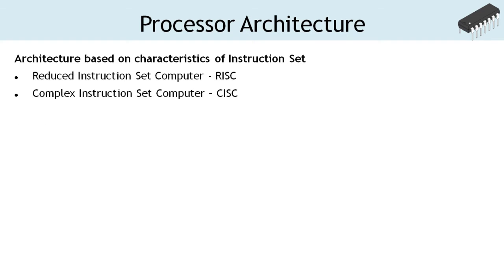In the last lesson I stated that microcontrollers use reduced instruction set architecture and microprocessors are based on complex instruction set architecture. So what is the instruction set architecture? Based on the characteristics of instructions supported, the architecture of a microprocessor is classified into reduced instruction set computer and complex instruction set computer, known as RISC and CISC respectively.